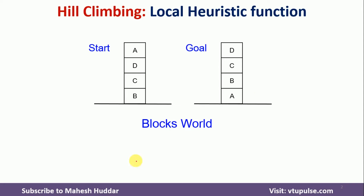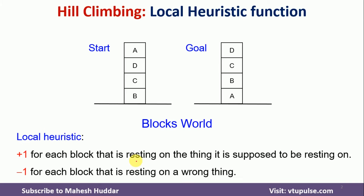First, we will consider the local heuristic function. In this function, we give a plus one reward for each block that is resting on what it is supposed to rest on. For example, we expect B should rest on A, A should rest on the ground, C should rest on B, and D should rest on C. If that is the case, we give plus one.